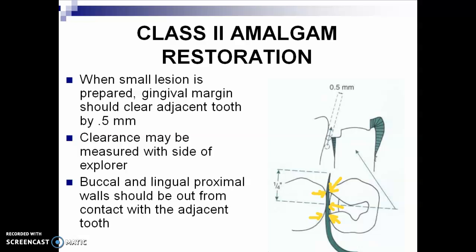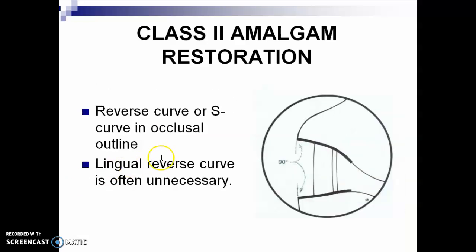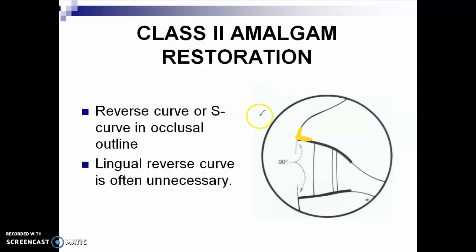Next, the S-curve or reverse curve. We always place the S-curve or reverse curve in the buccal cusp area to achieve a 90-degree cavosurface angle — to protect the tooth and the restoration from fracture during mastication. If that is the case, then the S-curve or reverse curve is part of your resistance form.